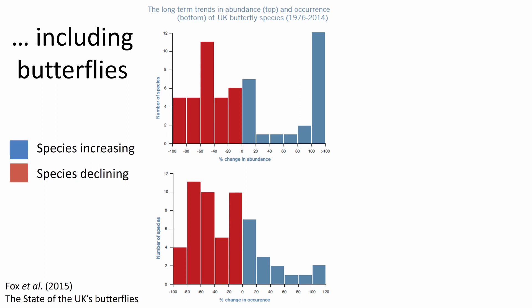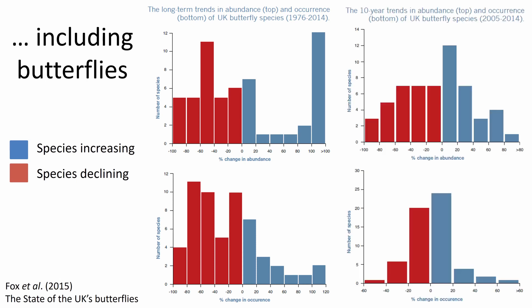The large blue is a really good example — it was extinct back in the 1970s and has undergone huge increases since then, going from basically nothing. This pattern is the long-term trend from the 1970s to the last decade. Things look a little bit better if you look at the short-term trend for the 10 years up to 2014 — there are slightly more species in the blue, probably a combination of some species being favored by climate change and positive results of conservation action — but there's still a large chunk of species that are declining or have declined in the last 10 years.